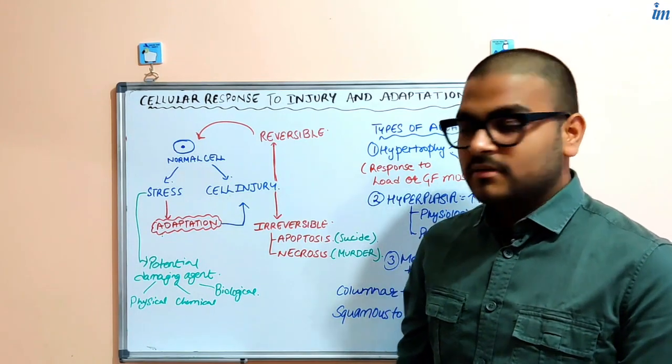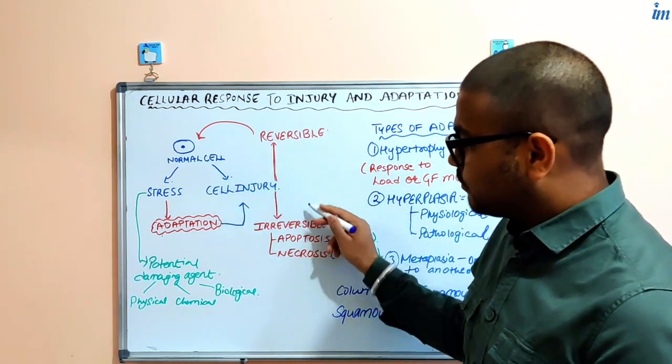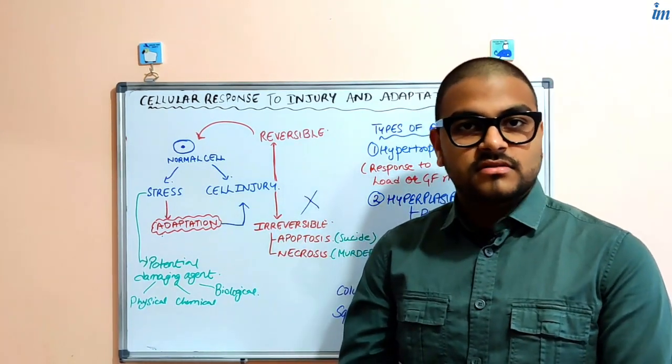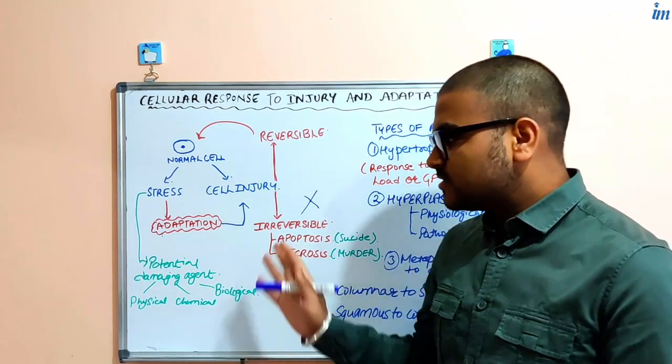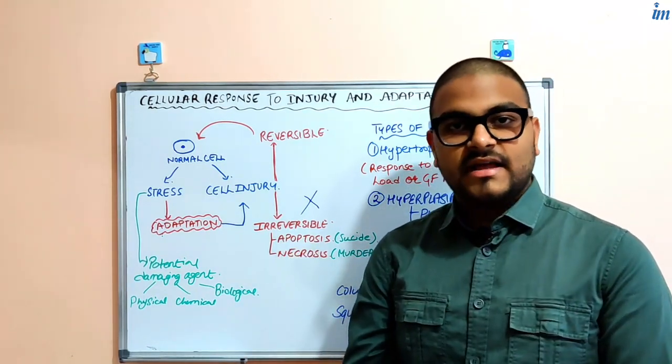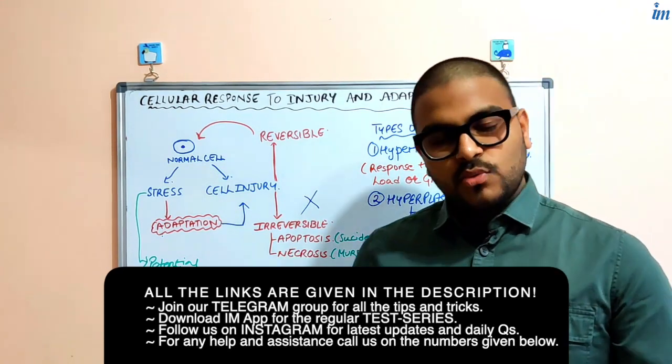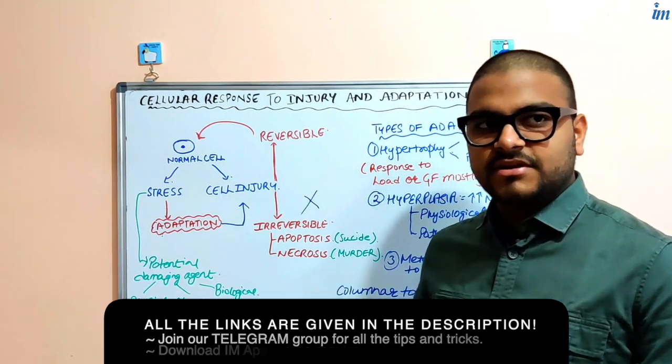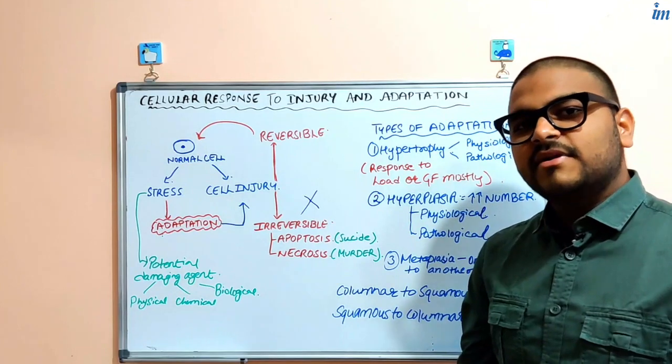It's a very bad situation for the cell - it won't be normal. Irreversible injury has two types: apoptosis and necrosis. We'll have a complete discussion on these topics later.